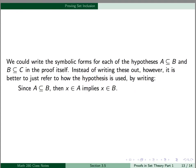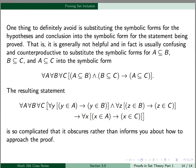We could write the symbolic forms for each of the hypotheses — A⊆B and B⊆C — in the proof itself. Instead of writing these out, however, it's better to just refer to how the hypothesis is used by writing, as I did in the proof: since A is a subset of B, then x is an element of A implies x is an element of B. One thing to definitely avoid is substituting the symbolic forms for the hypotheses and conclusion into the symbolic form for the statement being proved. That is generally not helpful — in fact it's usually confusing and counterproductive. As you can see in the slide, you obtain an enormously complicated symbolic form that obscures rather than informs you about how to approach the proof.